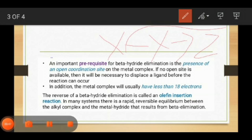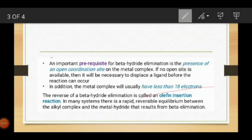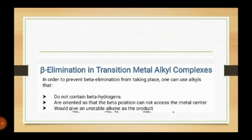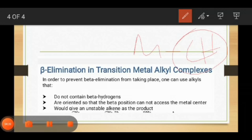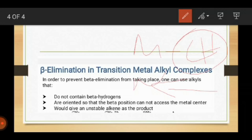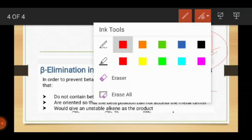Beta elimination in transition metal complexes can be protected by three following ways. First, if the complex does not contain beta hydrogens — if only alpha hydrogens are present and no beta hydrogens, beta elimination is prevented. Second, if the beta position cannot access the metal center — there is no accessibility to the metal center. Third, if the reaction would give an unstable alkene as a product, beta elimination is also suppressed in this way.